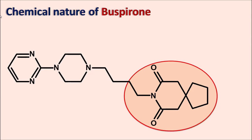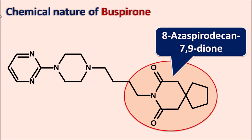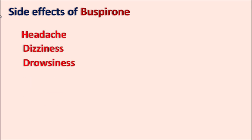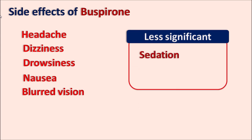Along with nitrogen within the ring, this is the 8-azaspiro[4.5]decane-7,9-dione ring system present in buspirone. The side effects of buspirone include central effects like headache, dizziness, drowsiness, nausea, and blurred vision. Side effects like sedation and muscle paralysis are less significant with buspirone compared with benzodiazepines, where these are more pronounced.